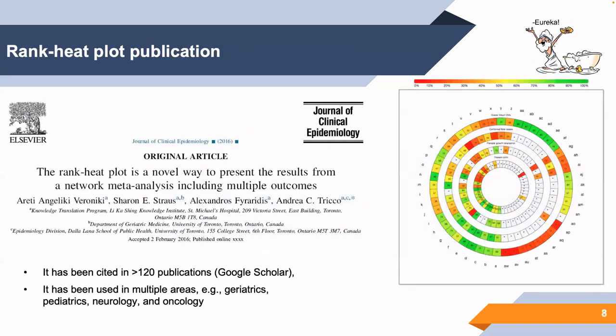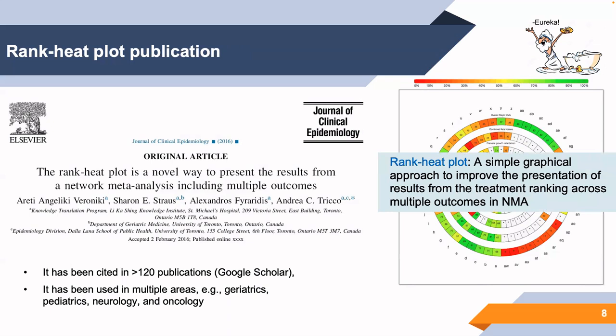In this paper, we presented a simple graphical approach to improve the presentation of results from treatment ranking across multiple outcomes in network meta-analysis. The ranking plot was first developed and published in 2016, and it allows the fast identification of the most likely best and most likely worst interventions with respect to their effectiveness and safety. It can also identify interventions that have not been studied for a specific outcome. The ranking plot has already been cited in more than 120 publications according to Google Scholar and has been used in multiple areas such as geriatrics, pediatrics, urology, and oncology.